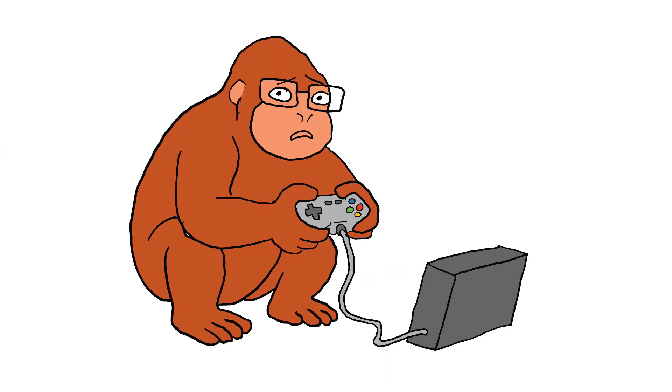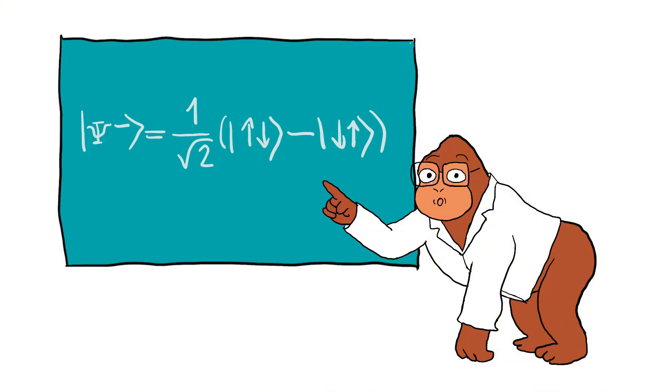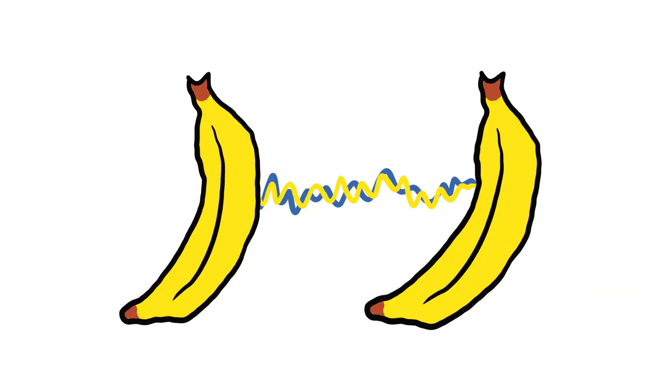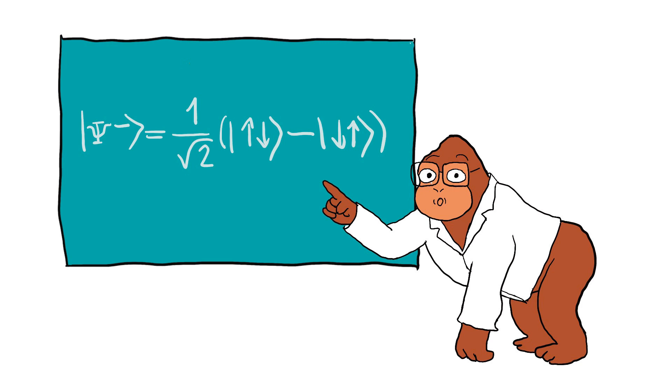While normal computers work with zeros and ones, quantum computers can process multiple possibilities at the same time, thanks to superposition and entanglement. This could be a huge revolution in solving incredibly difficult problems.